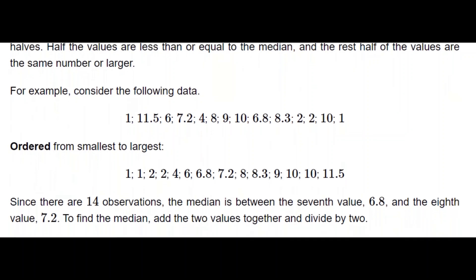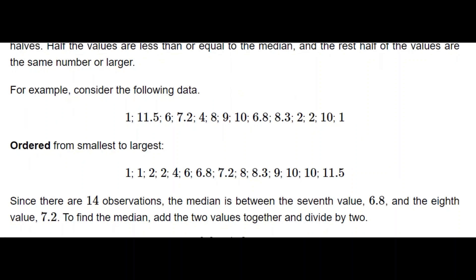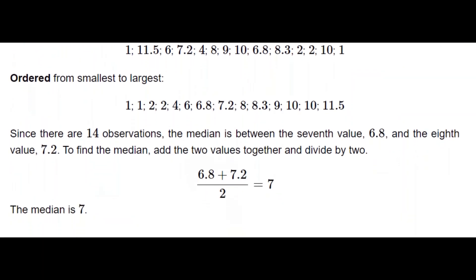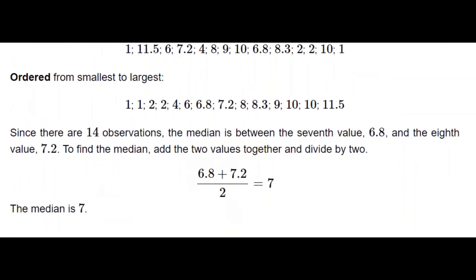Among these 14 observations, the median should be between the 7th and the 8th value, which are 6.8 and 7.2. So we add them and divide by 2 to get the median, which turns out to be 7. Note that 7 is not actually among the data values — 7.2 is there, but 7 is not — because with an even number of values the median is found by taking the midpoint of the 7th and 8th values.